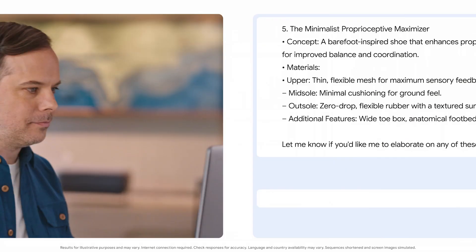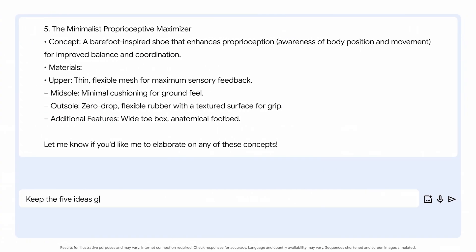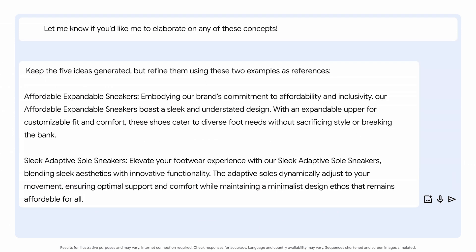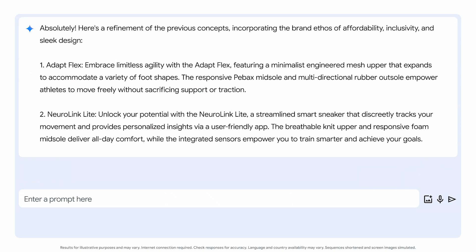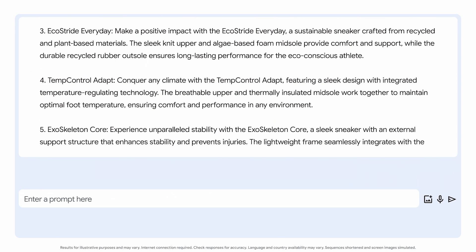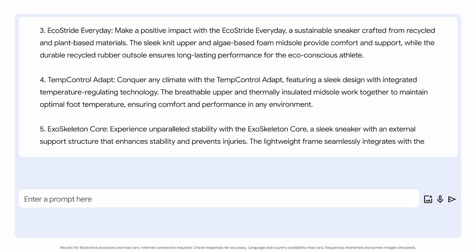To practice few-shot prompting with our new sneaker line, let's include descriptions of shoes that already exist — one from a budget line of shoes, and the other with a new adaptive sole. We can input those descriptions like this: 'Keep the five ideas generated, but refine them using these two examples as references.' Here's where we'll paste in the references. There are a lot of choices here, and they all seem like good options for the task — and this is cool: a shoe that regulates temperature.